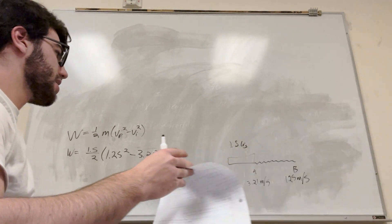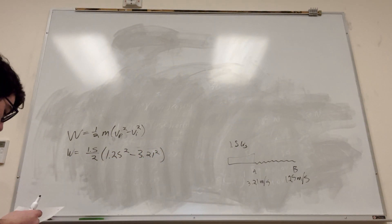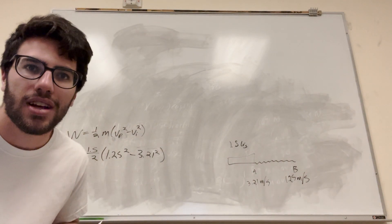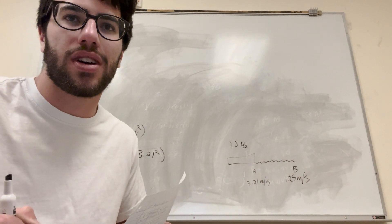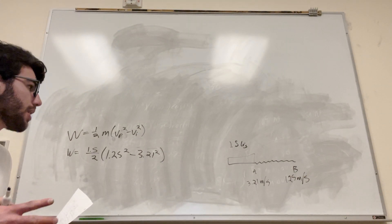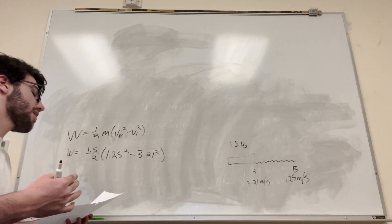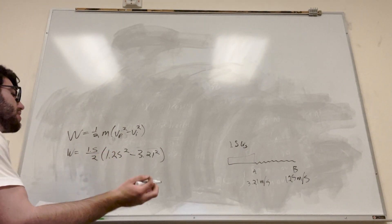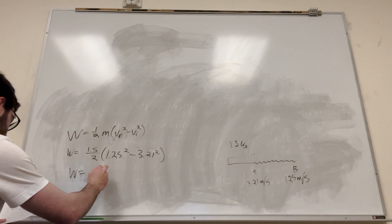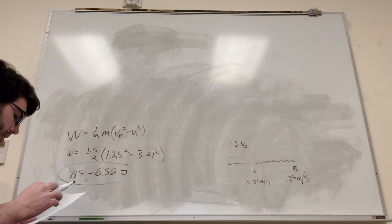We are going to get a negative number, because the book slows down. It's asking how much work has been done on the book — the ground is doing work on the book, so the work is going to be negative because energy is being removed. So negative 6.56 joules — that's how much work has been done on the book.